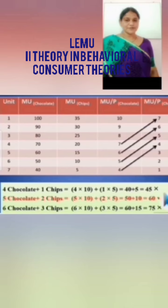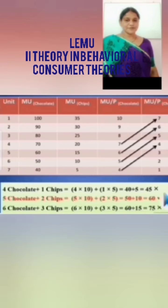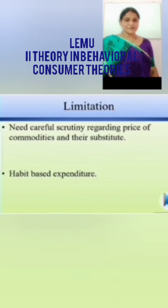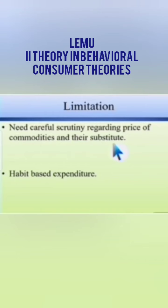Are you getting my point — how we calculate our law of equilibrium? Now let's see some limitations. The consumer needs careful scrutiny regarding the price of commodities and their substitutes. Every time we can't assess every commodity and its price — we can't scrutinize every time. Another limitation is habit-based expenditure. For example, if my taste is only chocolate and I don't like chips, I can't operate this law. These are the two limitations of the law of equi-marginal utility.